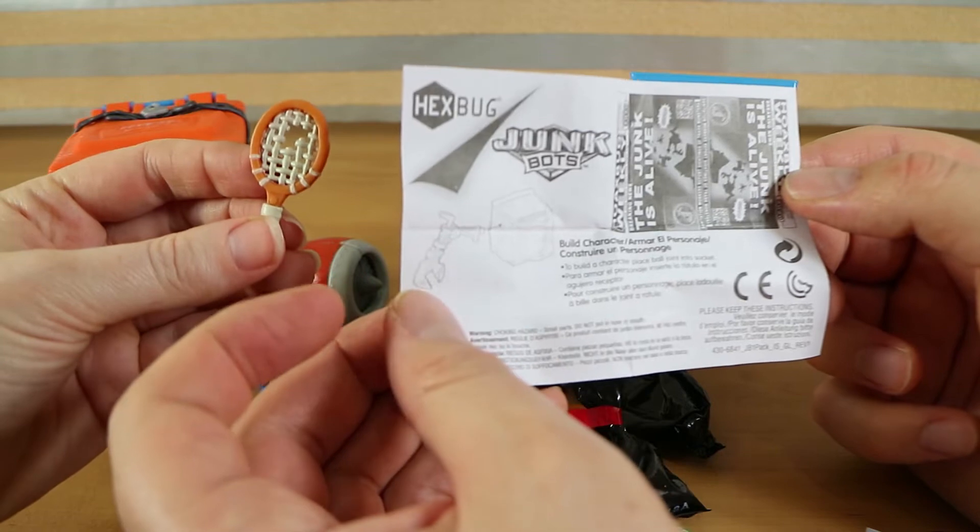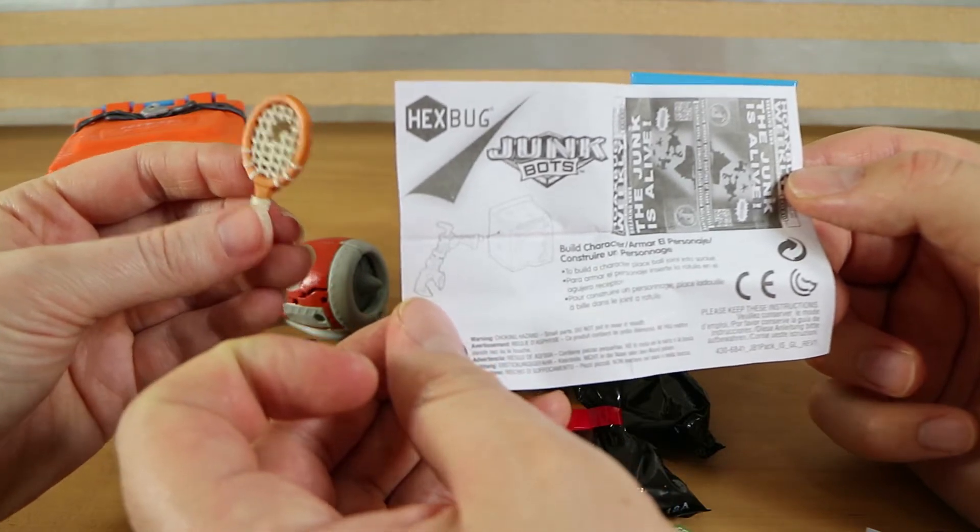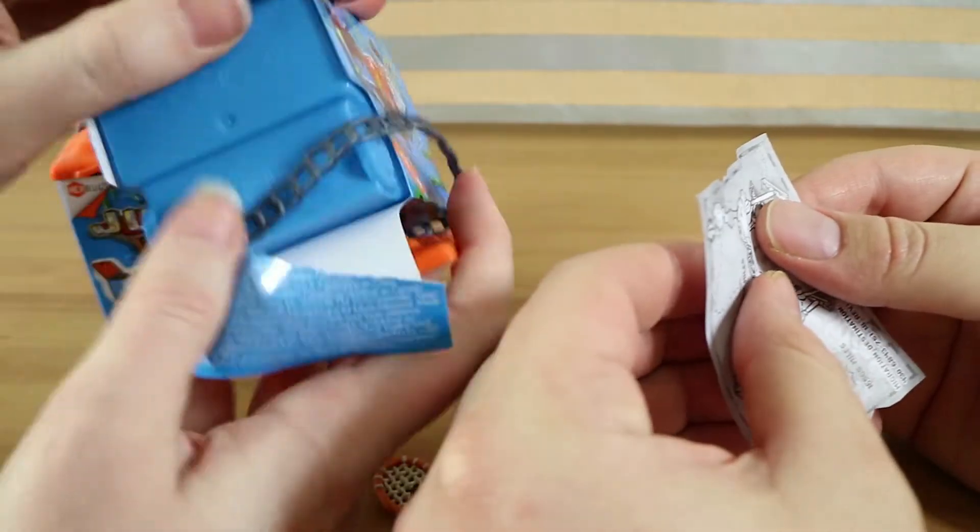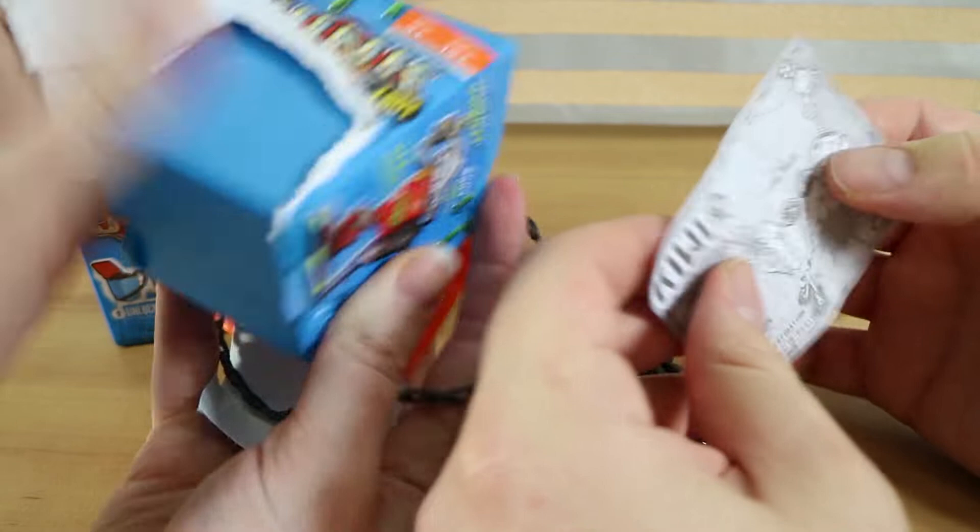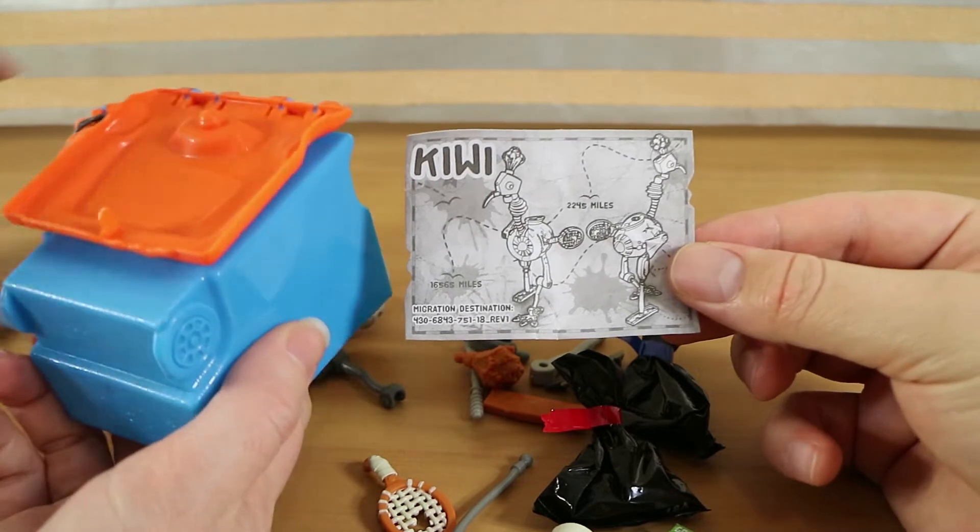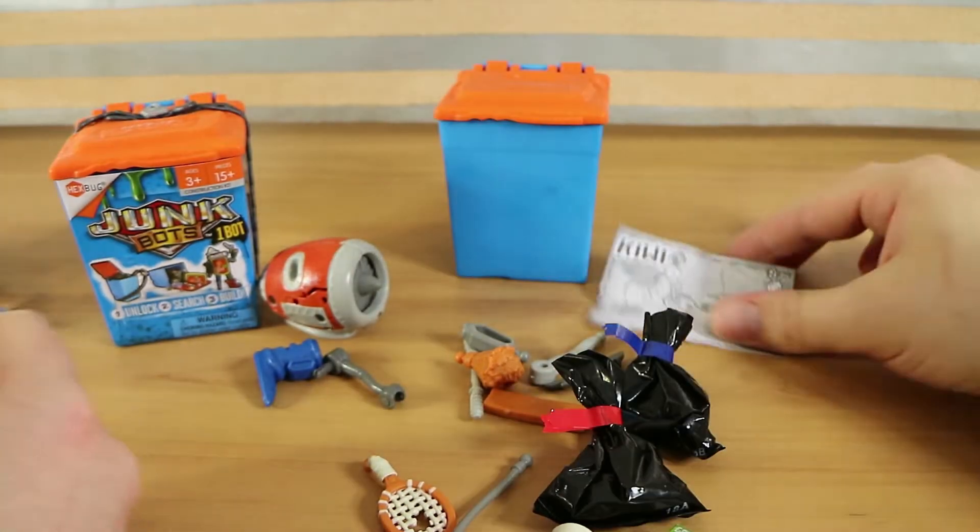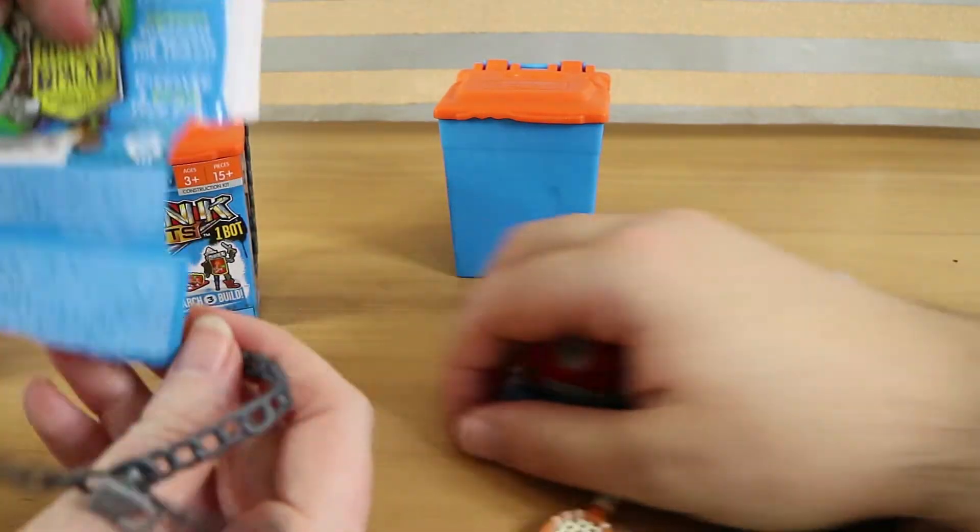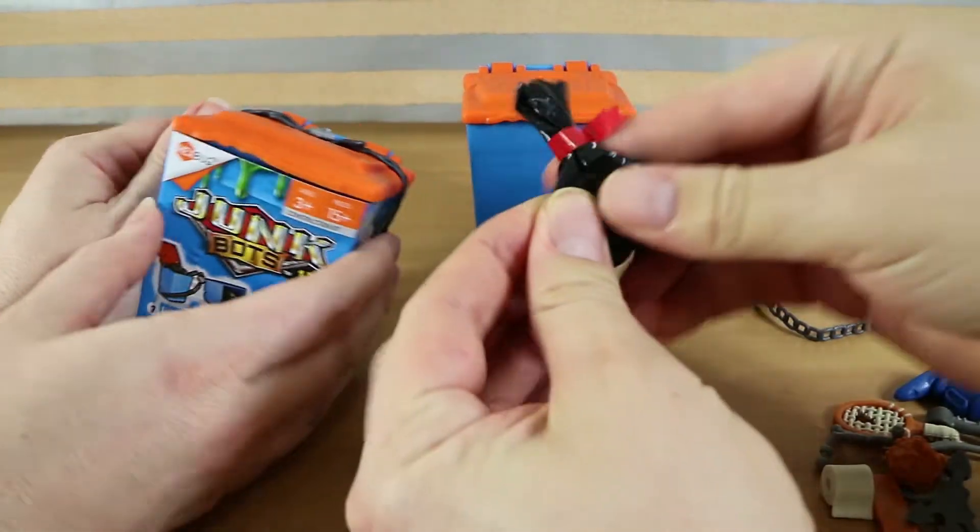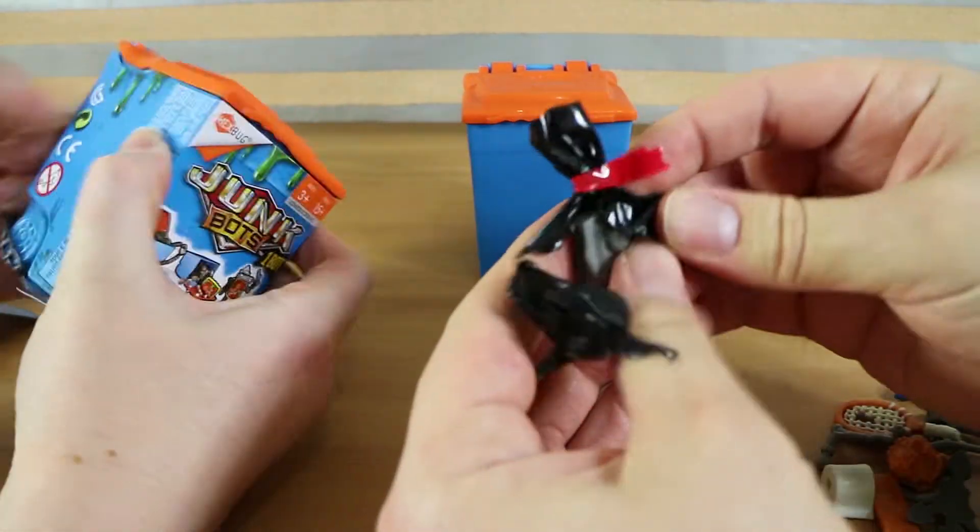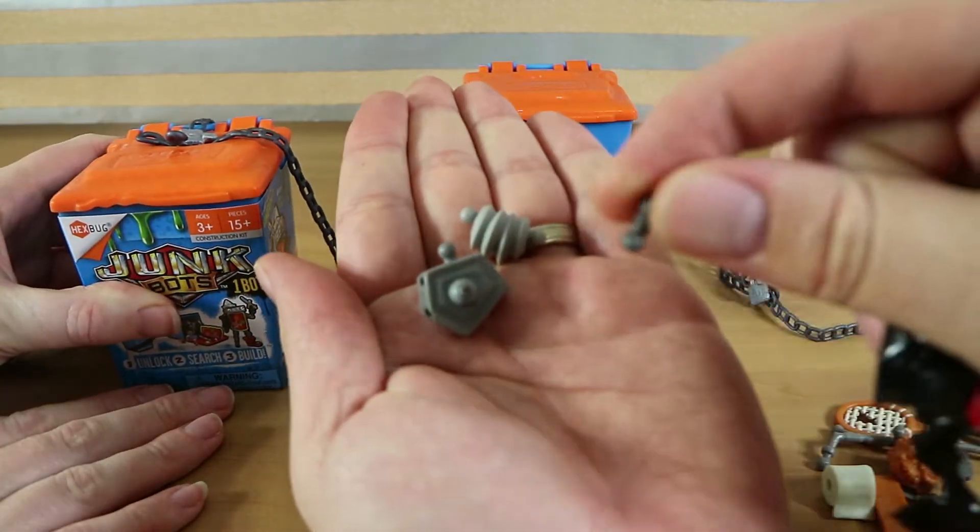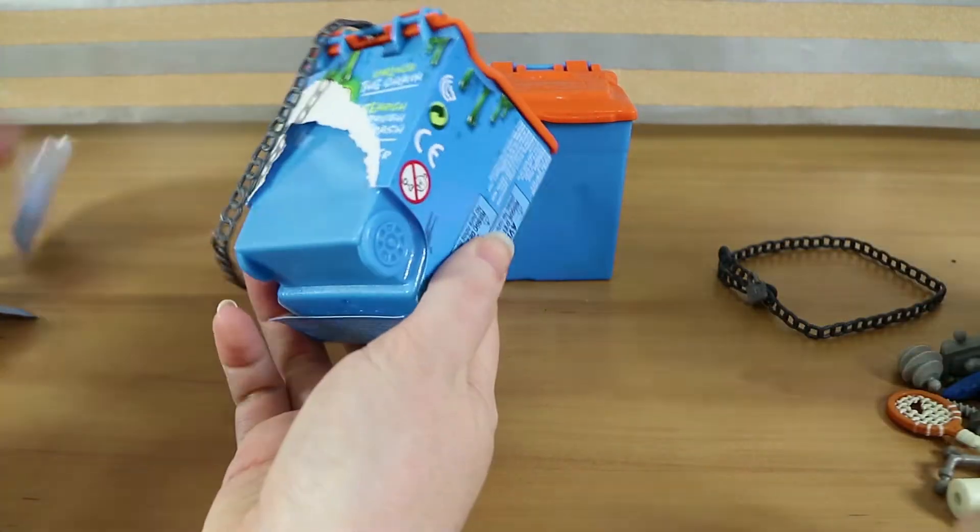To build a character place ball joint into socket and then I assume just go from there. Is there inside like the cardboard on the outside maybe like a checklist or anything so we can see what our characters look like? No. Well I've got a Kiwi. So it looks like no checklist unfortunately so we can't see what sort of 36 there are or if there's any rares or anything. Of your Kiwi robot. I like Kiwis.